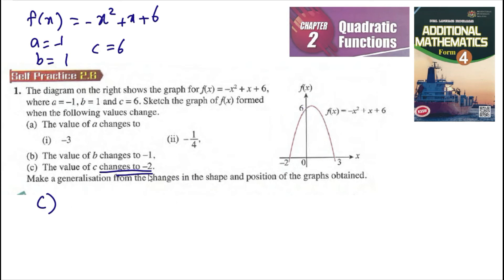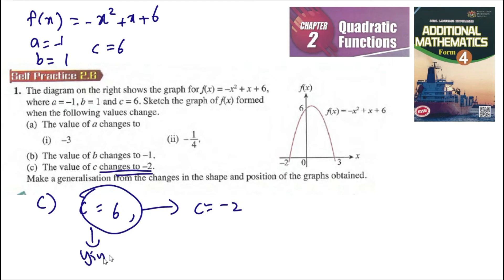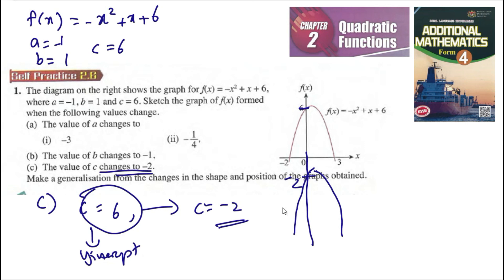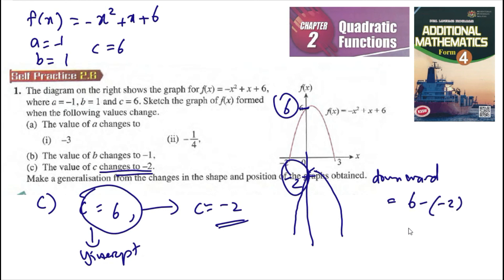c changes from 6 to negative 2. Since c is the y-intercept, the y-intercept was at 6, and when c equals negative 2 the y-intercept is at negative 2. The graph moves downward, intercept at negative 2. The movement is from 6 to negative 2, which is a shift of 8 units downward.